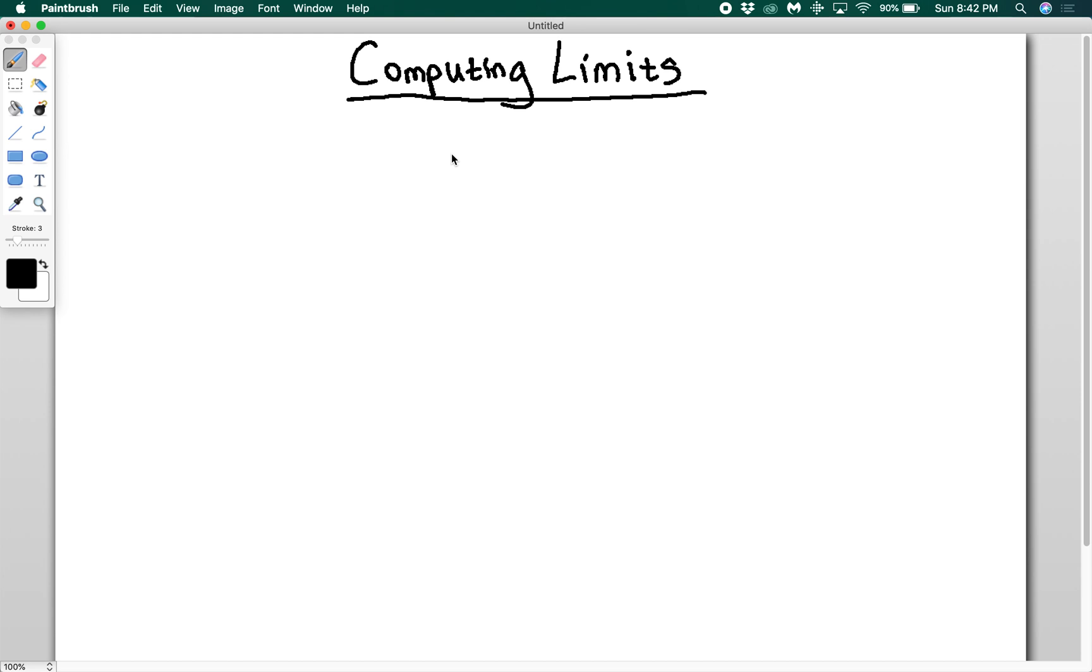If it yields an indeterminate form such as zero over zero or infinity over infinity, those are the most common, then you have to do some algebra. We're just going to go through and do three examples for this video to show you how to do this.